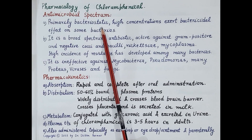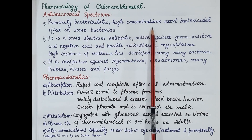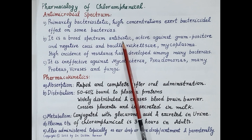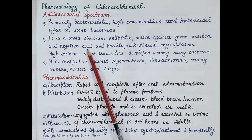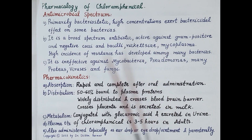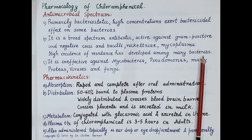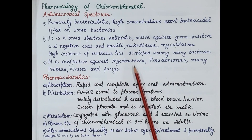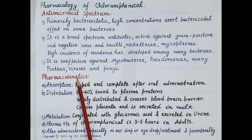Chloramphenicol is primarily bacteriostatic, but at higher concentrations it kills some bacteria and exerts a bactericidal effect. It is a broad-spectrum antibiotic active against gram-positive and gram-negative cocci and bacilli, and also active against Rickettsia and Mycoplasma. Importantly, a high incidence of resistance has developed among many bacteria. Chloramphenicol is also ineffective against Mycobacteria, Pseudomonas, many Proteus species, viruses, and fungi.